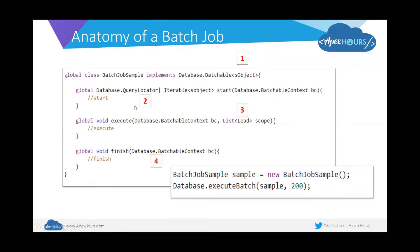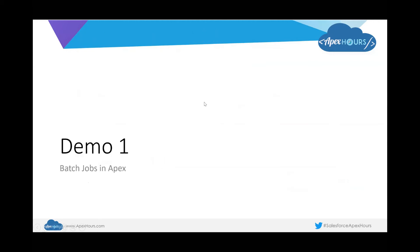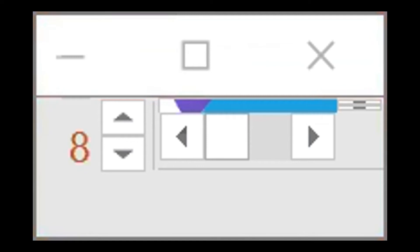This is the anatomy of a batch job or batch Apex on the Lightning Platform, and this small code snippet is how you would execute your batch job. Now let's go to our first demo — how do you write a basic batch job in Apex and use it to perform asynchronous processing. Let me switch over to my Salesforce instance.